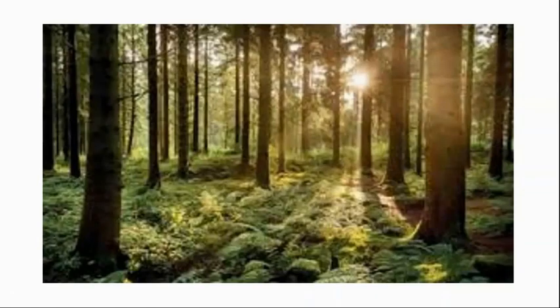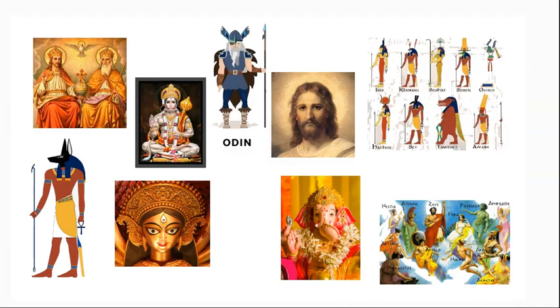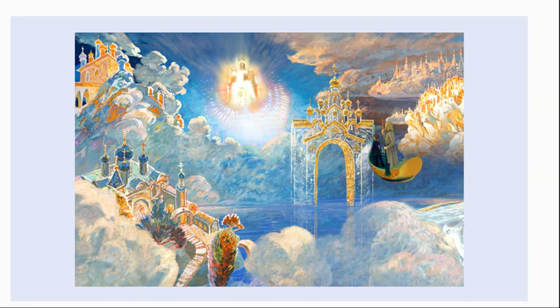In the ontology of religions, supernatural beings are typically accepted as existing — gods, angels, demons — along with supernatural places like heaven and hell.